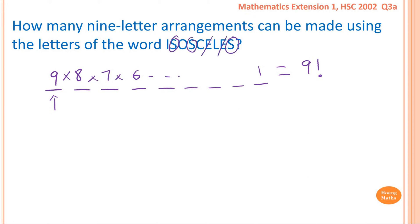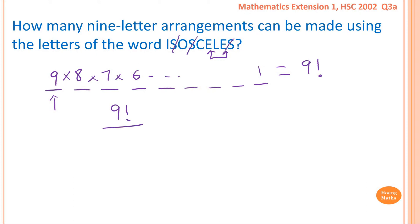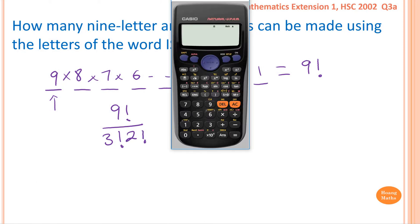However, we have three S's that are the same and two E's that are the same. So if we switch one S with another S, it doesn't make any difference — it's the same arrangement. Similarly, if you switch the E's around, it's also the same. Therefore, we need to divide nine factorial by three factorial for the three S's, and then divide by two factorial for the two E's. So we calculate nine factorial over three factorial times two factorial.